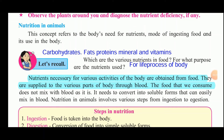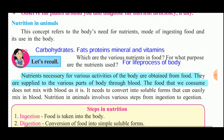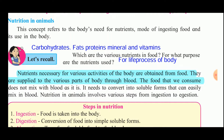Good morning students. Let us begin with the next topic: Nutrition in Animals. This concept refers to the body's need for nutrients, the mode of ingesting food, and its use in the body. The mode of ingesting food means how food is taken in by animals and how these nutrients are useful for the body. The various nutrients in food are carbohydrates, fats, proteins, minerals, and vitamins.